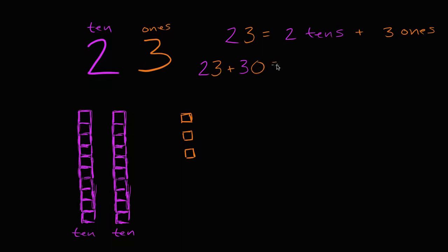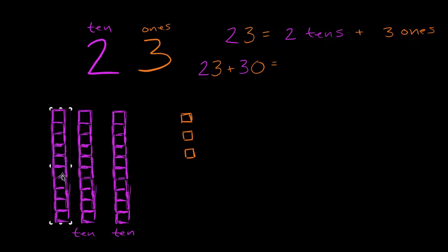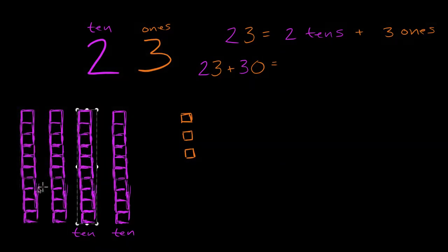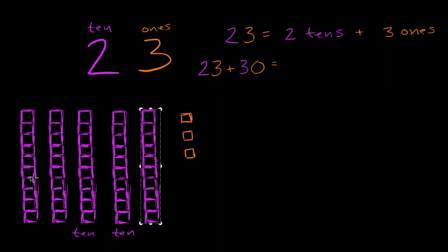So what is this going to be? Well, I start with 23, which I have represented here, and I'm gonna add 30. 30 has three in the tens place, so it literally means I'm gonna add three tens, and I'm gonna add zero ones. So let me add those three tens. So that's one ten, this is two tens, and then that is three tens. So I've added one, two, and three tens here.